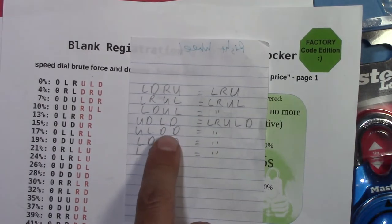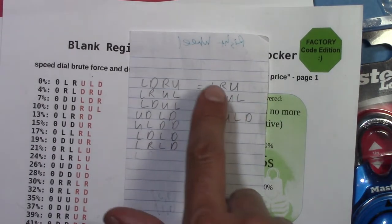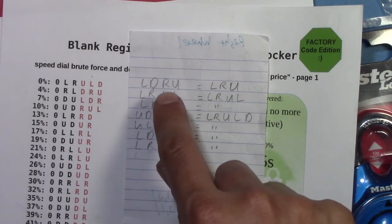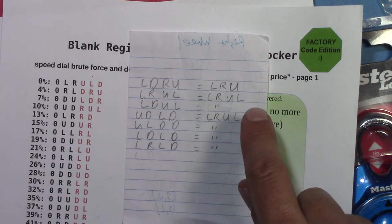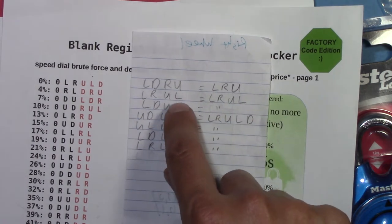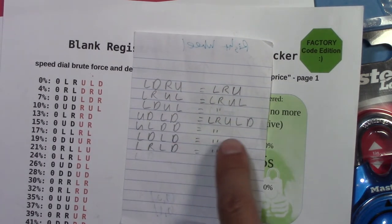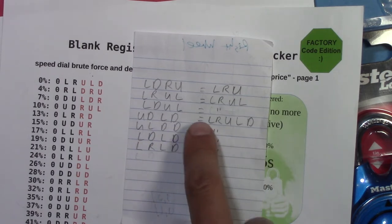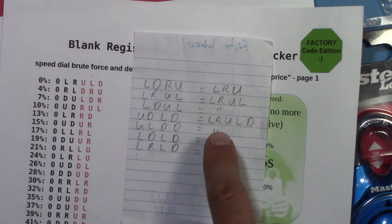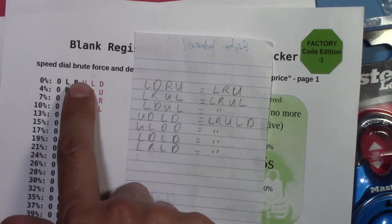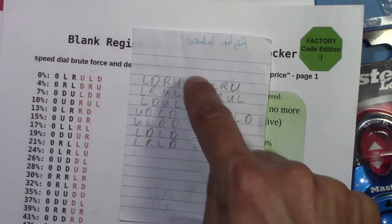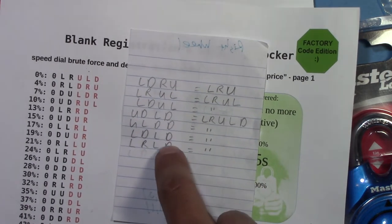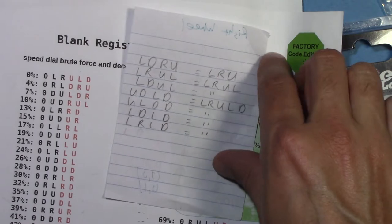This top line is exploiting all the equivalencies in these states. First we do left right up which matches that. Then we do left right up left which matches that possible factory code. So in just one, two, three, four, five moves we've checked one, two, three, four, five, six, seven factory codes.